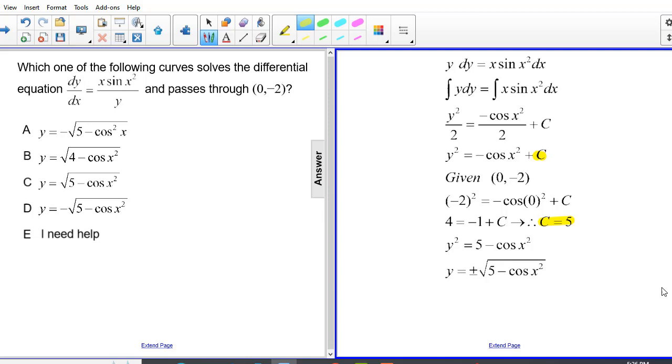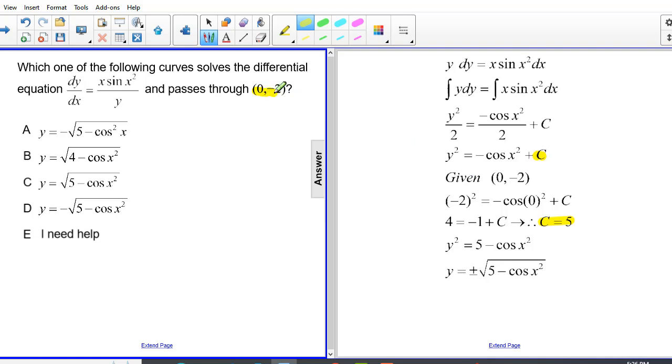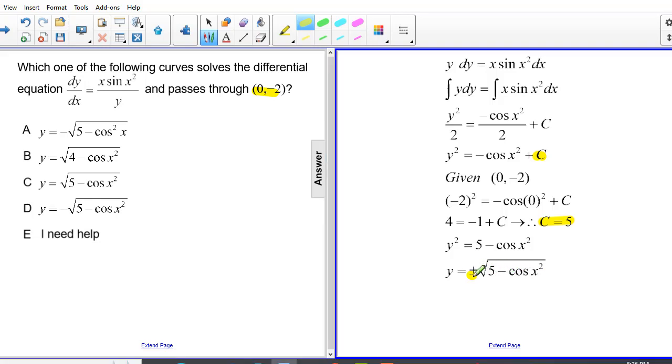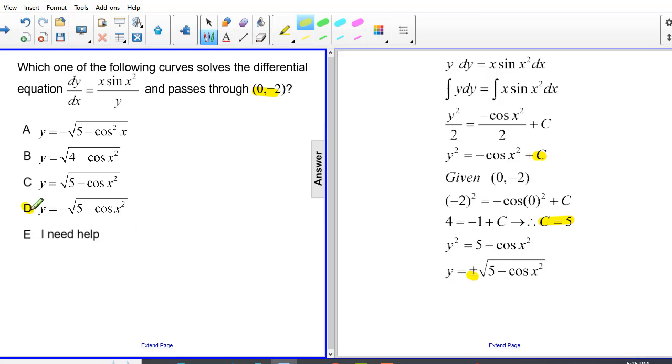Now, I want to point out that the curve goes through (0, -2), which means y has to be negative. Since y is negative, we know we can't have a negative underneath the radical. So the negative must be outside the radical, which leads me to believe the correct answer is D.